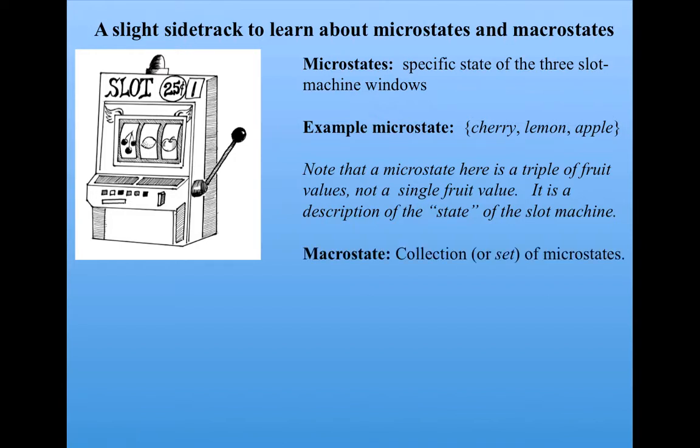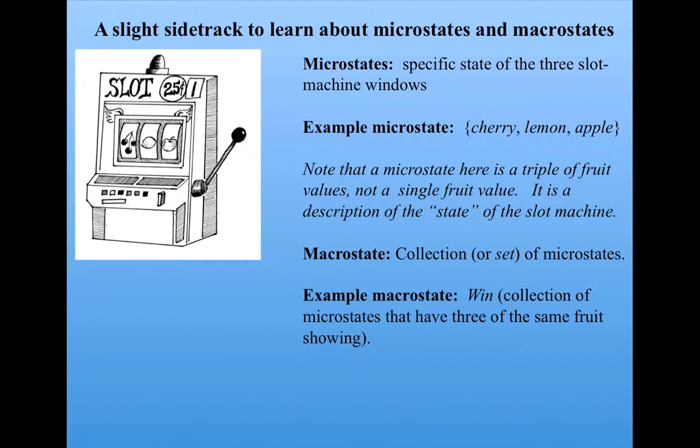A macrostate is a collection, or a set, of microstates. One example would be the so-called win macrostate, which is the collection of all microstates that have three of the same fruit showing.